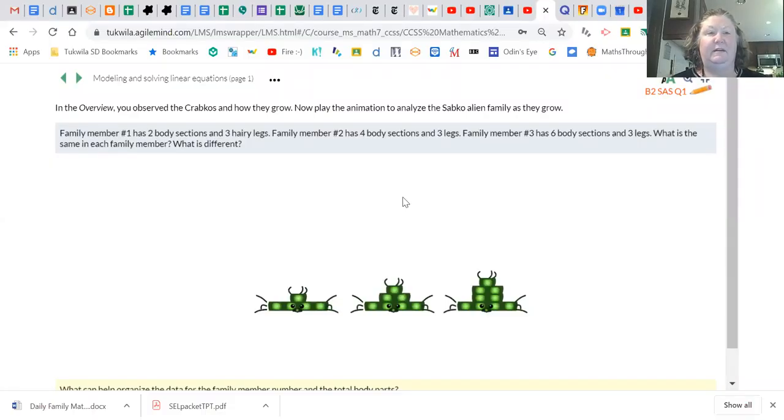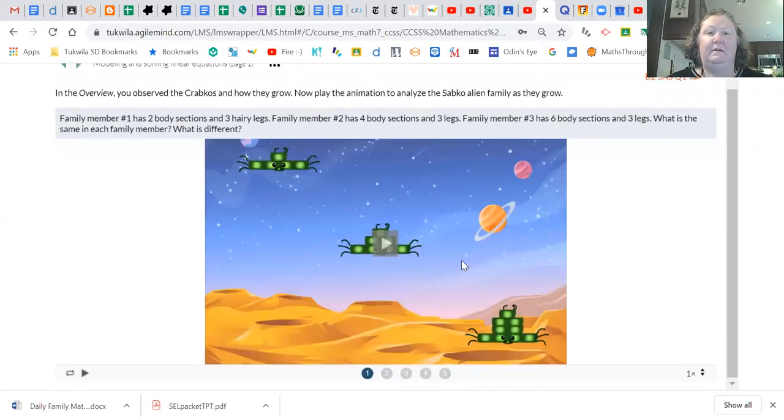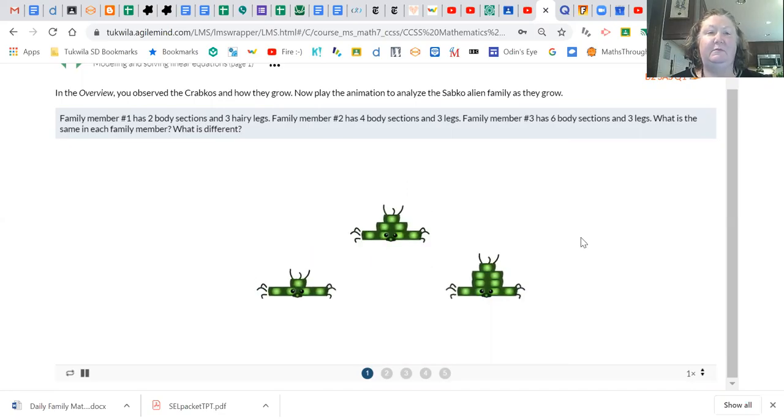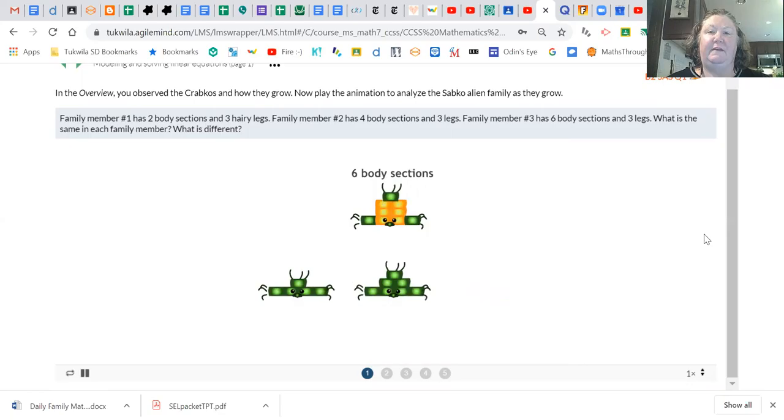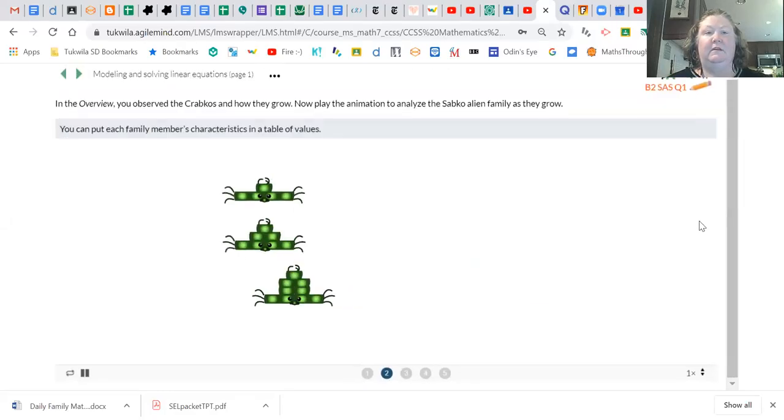Okay, we are going to be looking at a different family of aliens this time, it's a Sabco family. I want you to notice that family member one has two body sections and three legs, family member two has four body sections and three legs, and family number three has six body sections and three legs.